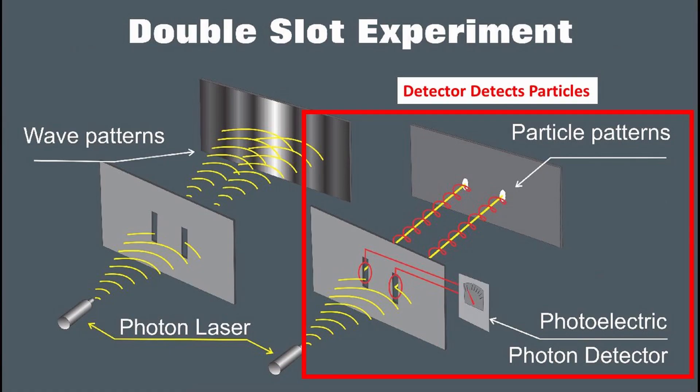Seeing electrons transform into waves was mind-boggling in itself, but this was only the beginning. Scientists wanted to see how the electron is transforming into a wave. They developed detectors which could trace the path of each particle as it travels through the experiment. We should now be able to determine how the particle becomes a wave, right? Wrong again. Something really weird happened — the particles stopped behaving like waves in the presence of a detector. The double slit experiment done this way could only detect particles. No waves appeared.